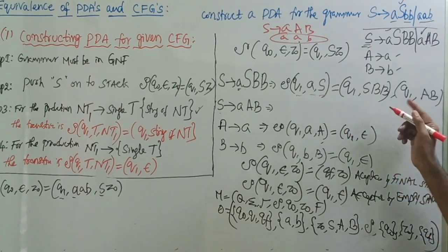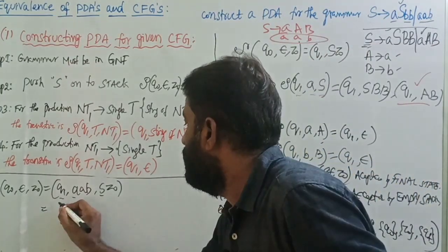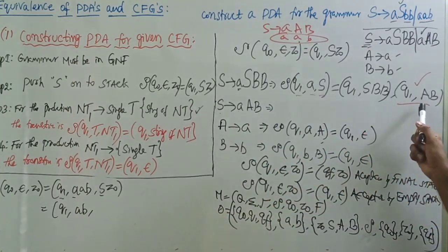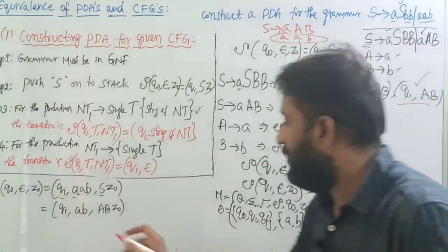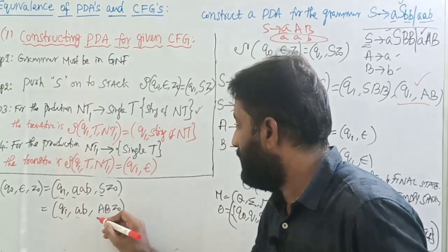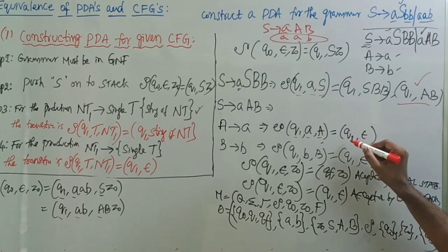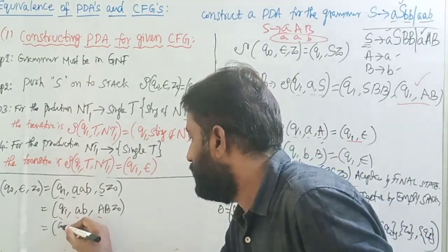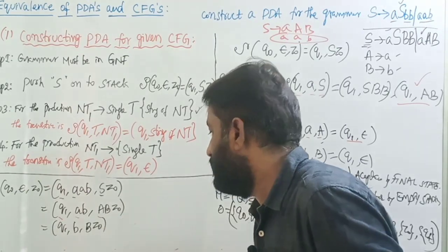Now observe: Q1, input symbol is a, top of the stack is S. We have two paths; I am taking this one — S is replaced by A B — so that equals Q1, next input symbols are 'ab', stack is A B Z₀. Then observe: present state is Q1, input symbol is a, top of the stack is capital A. Remove the top element by doing the pop operation, remaining on the same state. That equals Q1, next input symbol is b, stack is B Z₀.